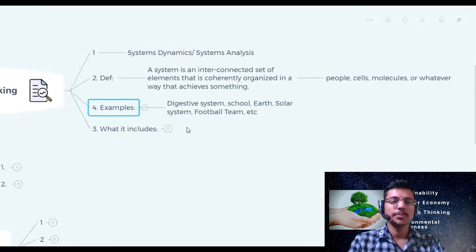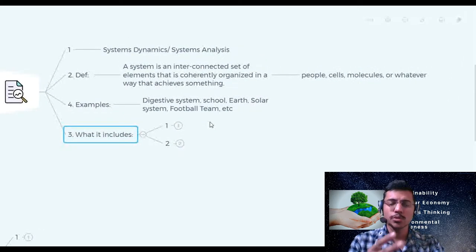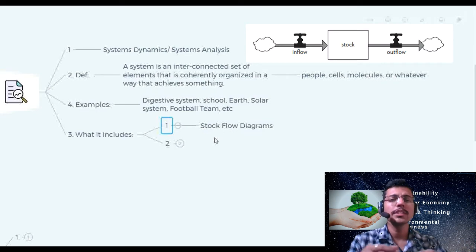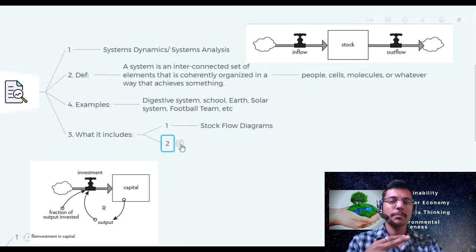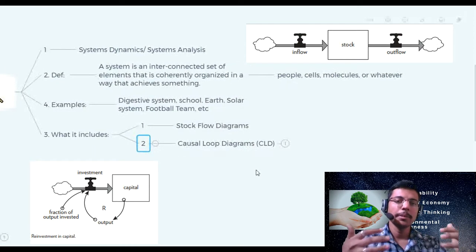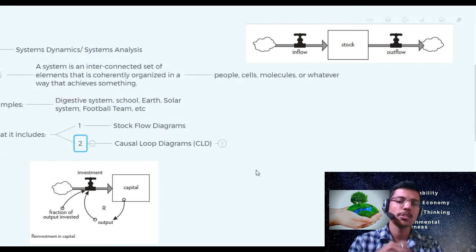Next is what it includes. In the systems thinking or systems analysis these two parts are very important. First is the stock flow diagram. In this there are multiple stocks and they are interacting with each other, multiple elements. And second is about the causal loop diagram or CLD. These multiple elements which are interacting with each other, there is some feedback loop that is continuously occurring with it and that we try to plot with causal loop diagram.